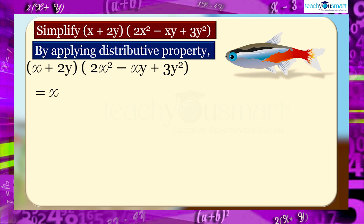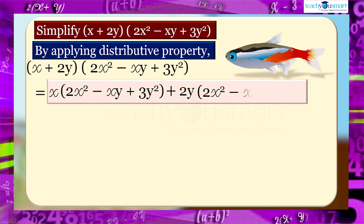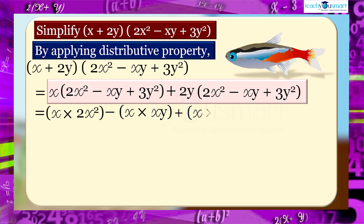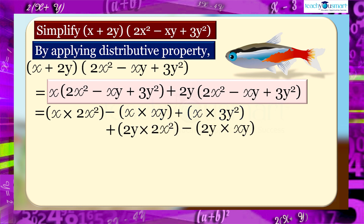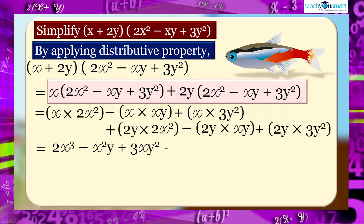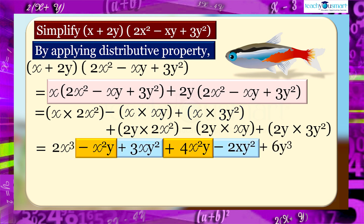Equals x multiplied by (2x² - xy + 3y²) plus 2y multiplied by (2x² - xy + 3y²), which gives x multiplied by 2x², minus x multiplied by xy, plus x multiplied by 3y², plus 2y multiplied by 2x², minus 2y multiplied by xy, plus 2y multiplied by 3y², equals 2x³ - x²y + 3xy² + 4x²y - 2xy² + 6y³.